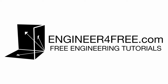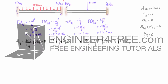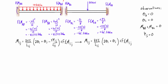Welcome back — this is part two of our slope deflection method example problem. This is exactly where we left off in the last video. The only thing added is I filled out the expressions for the fixed-end moments in kilonewton meters. Now what we want to do is plug those and other values into the slope deflection equation.